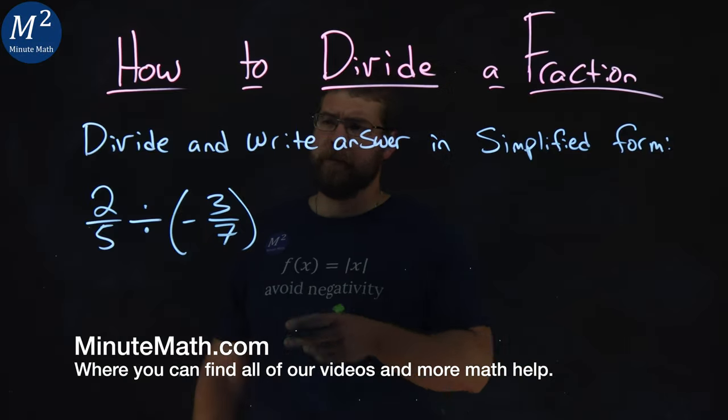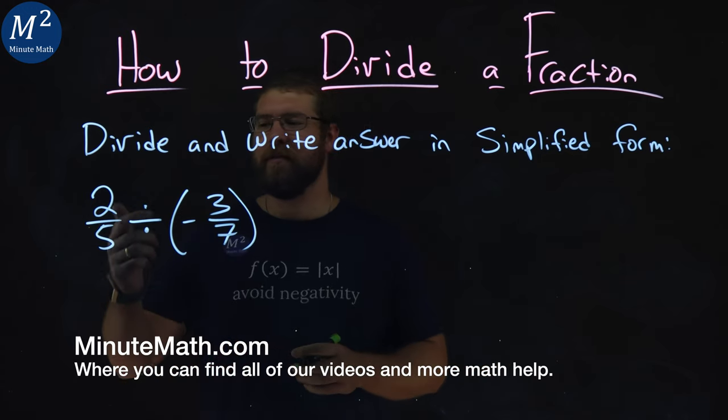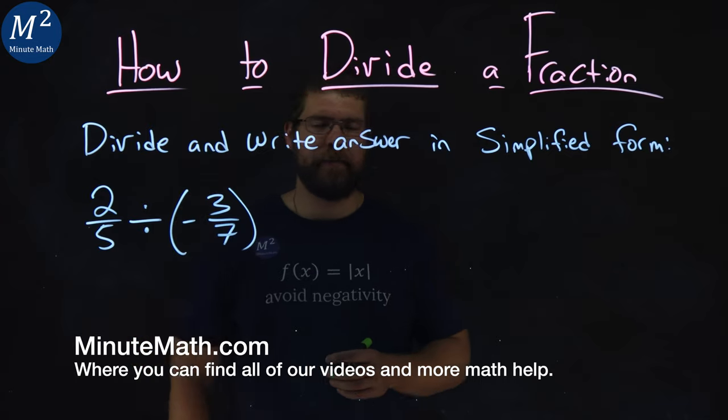We're given this problem right here. Divide and write answer in simplified form. We have two fifths divided by a negative three sevenths.